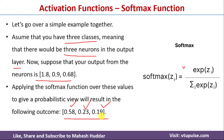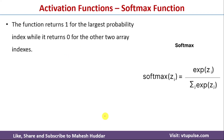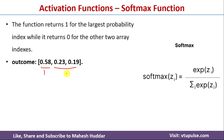Once the probabilities are calculated, the softmax function returns 1 for the largest probability and 0 for the others. Here, 0.58 is the largest probability, so it returns 1 for that and 0 for the remaining two. Since the probability 1 is at index 0, the final answer is class 0.